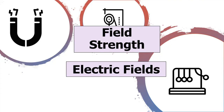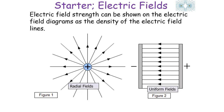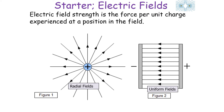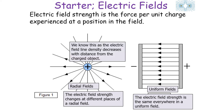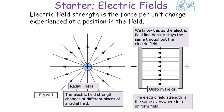The second property to look at is field strength. Electrical field strength can be shown on field diagrams as the density of field lines. It is the force per unit charge experienced at a position in the field. In radial fields the electrical field strength changes at different places, whilst in uniform fields the electrical field strength is the same everywhere. In a radial field the electrical field strength decreases with distance as field density decreases, but in a uniform field it stays the same.